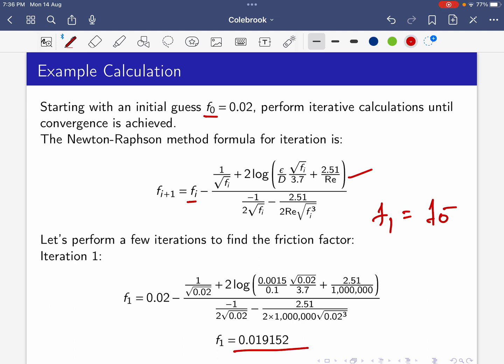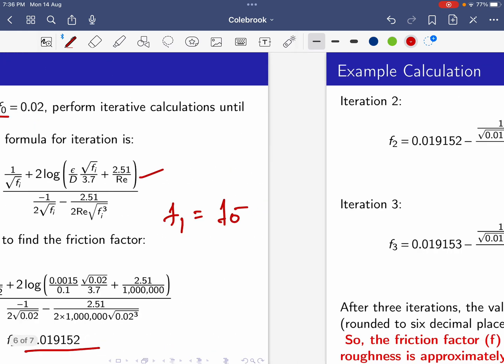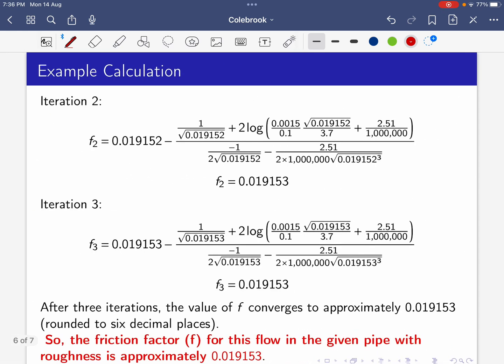After getting 0.019152, that becomes the next iteration guess value. For iteration 2: f₂ = 0.019153. For iteration 3: starting with f₂ = 0.019153 and plugging in all values, we get f₃ = 0.019153.